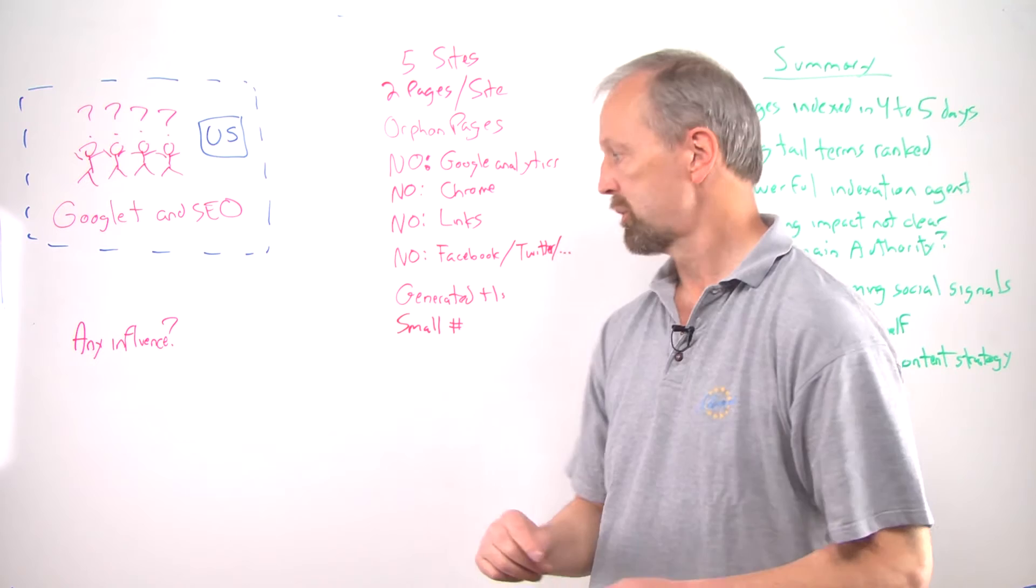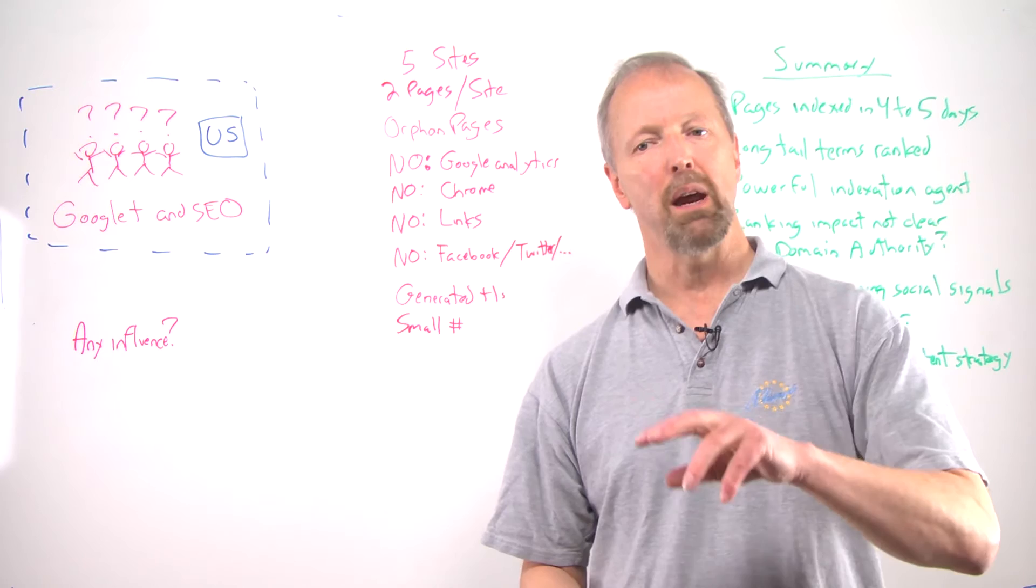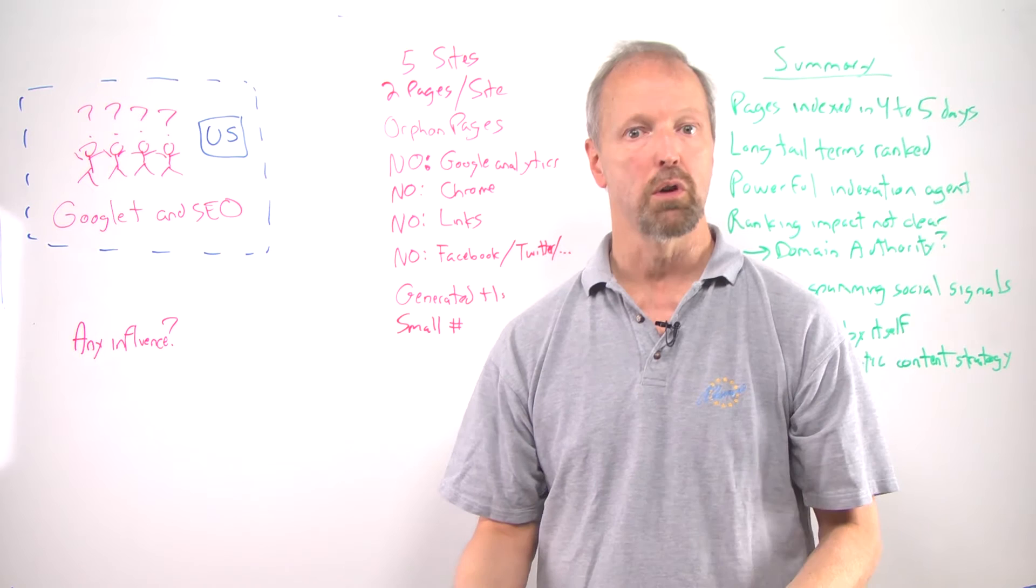So the only signal that could possibly have been used to discover the pages was Google Plus. And then we started generating Plus Ones. On each of the sites, we took one of the pages and did only a single Plus One.